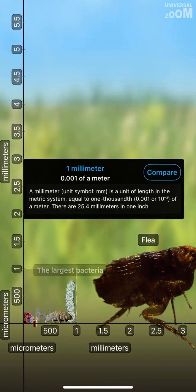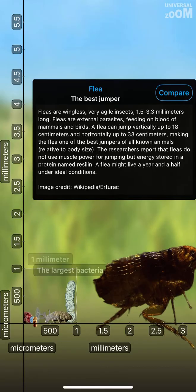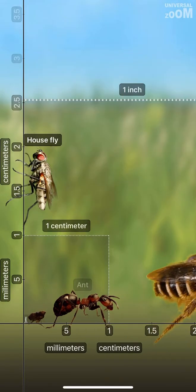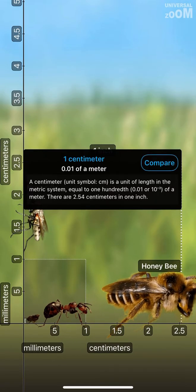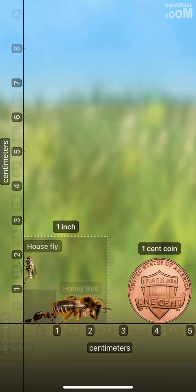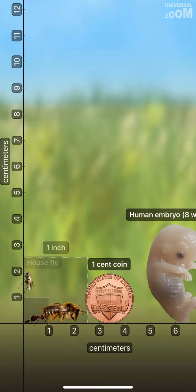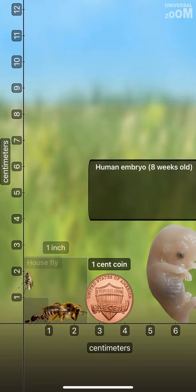1 Millimeter. Flea, Ant, House Fly. 1 Centimeter. Honey Bee, 1 Cent Coin, 1 Inch. Human Embryo.